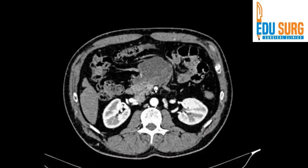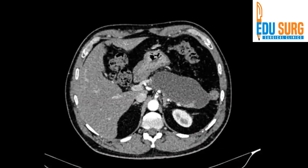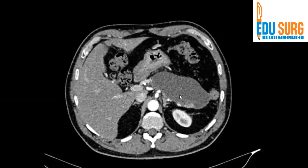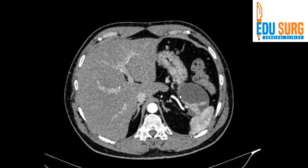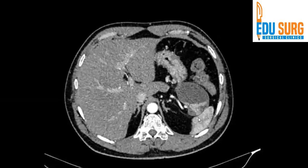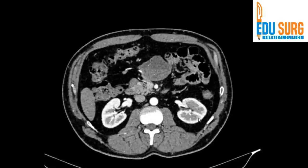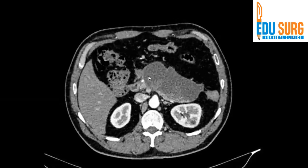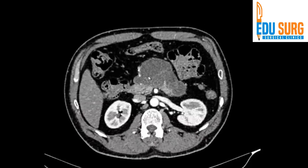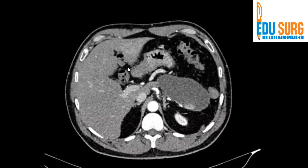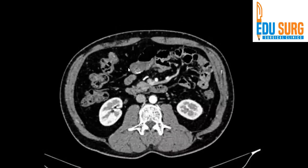Since this is the arterial phase, let us look at all the arteries. That is the SMA — the superior mesenteric artery — and the celiac artery. The splenic and the common hepatic arteries are visible. Let us trace the splenic artery behind the pancreas going into the spleen. The splenic artery looks okay — there is no aneurysm, which can be a frequent complication of pancreatitis. SMA looks good. Gastroduodenal artery also looks good. There are no pseudoaneurysms present in this case.